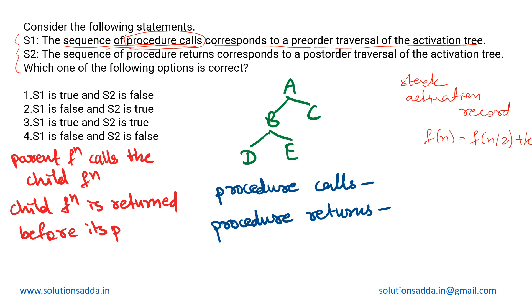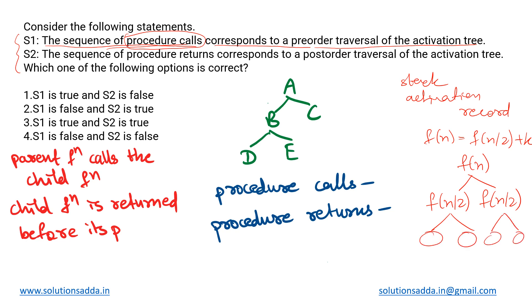If we trace that recursive function out in tree format, it will look something like this: we have f(n) at the top, then it branches out into f(n/2) and f(n/2), and they further branch out until we reach the base condition. Until the base condition is hit, we keep making procedure calls. That sequence in which the calls are made corresponds to a pre-order traversal of the activation tree — that is what S1 is saying.